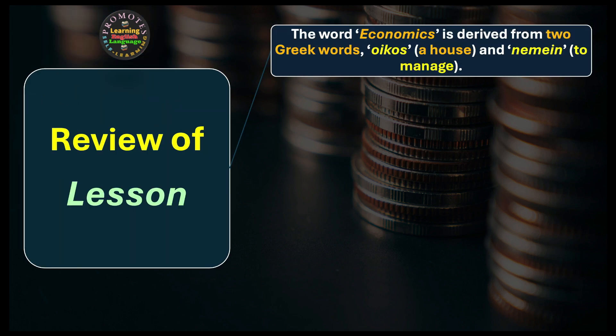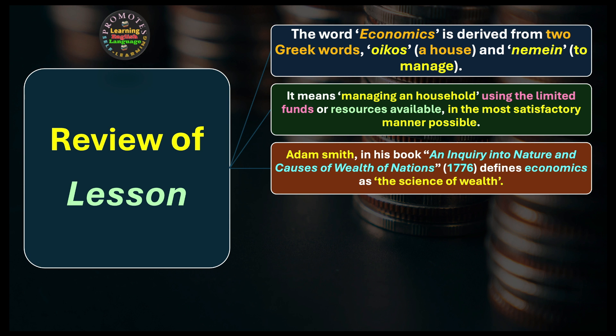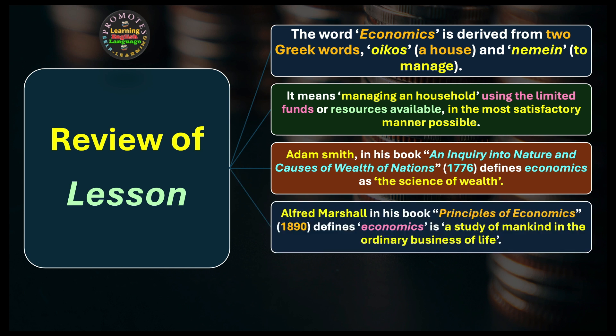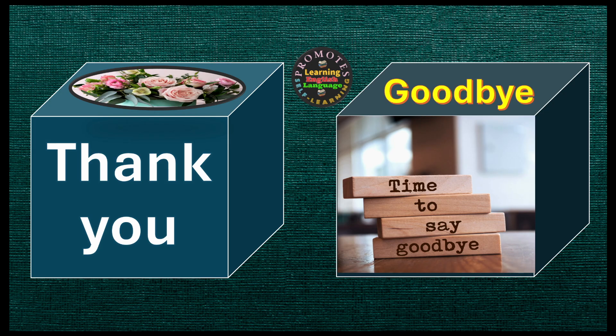To review: the word economics is derived from two Greek words — oikos, meaning a house, and nemein, meaning to manage — in other words, managing a household using limited resources in the most satisfactory manner. Adam Smith (1776) defines economics as the science of wealth. Alfred Marshall (1890) defines it as a study of mankind in the ordinary business of life. Economics is a branch of social science focusing on production, distribution, and consumption of goods and services.